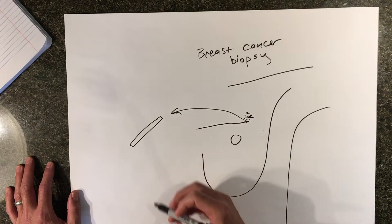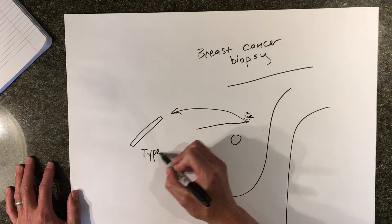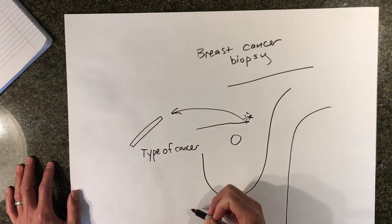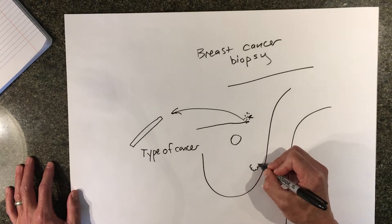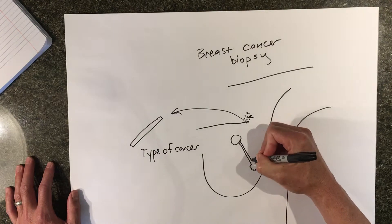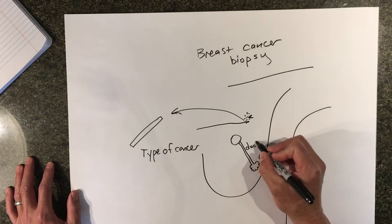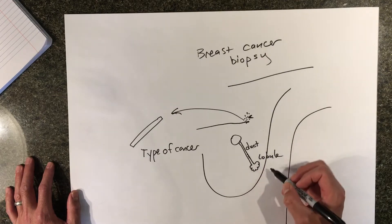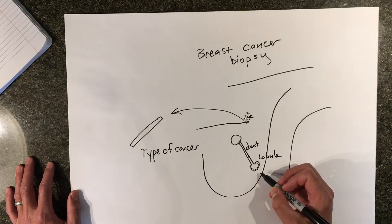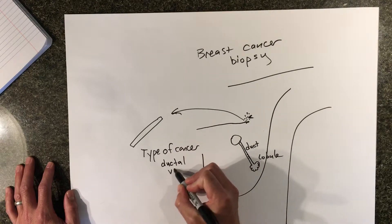The tissue that is examined is really looked at for several different things. First, we want to know the type of breast cancer. The main types are either lobular or ductal. The breast is designed for milk production — milk is produced in a part of the breast called a lobule, and it travels to the nipple in a tube called a duct. About 80% of breast cancers come from the cells that line the ducts, so we call them ductal breast cancer. About 20% come from the lobule, so we call them lobular breast cancer. The type — ductal versus lobular — is important.